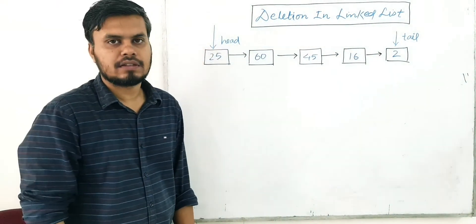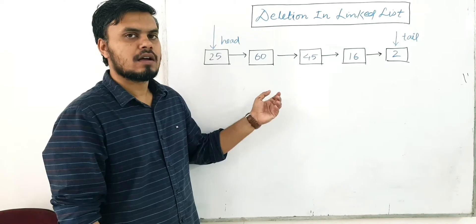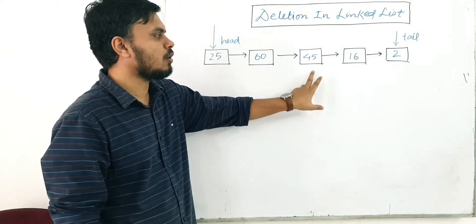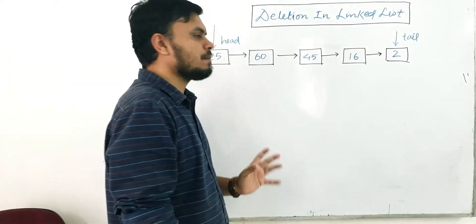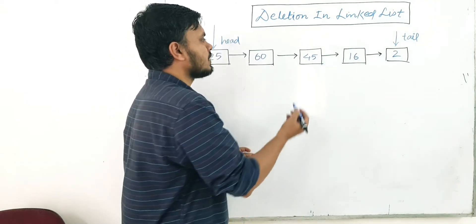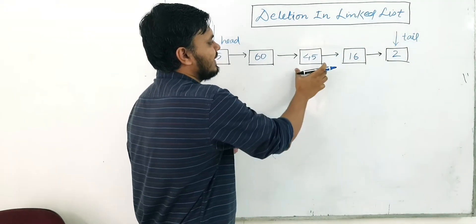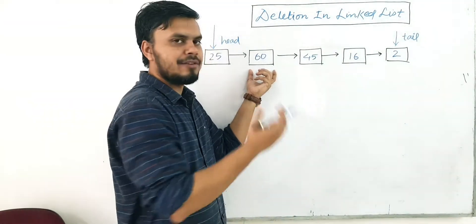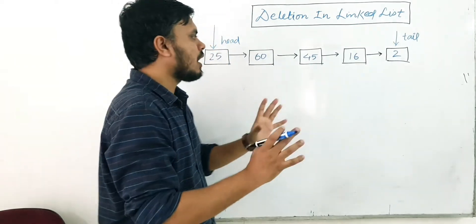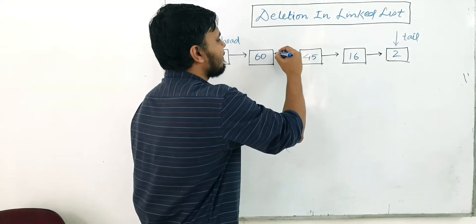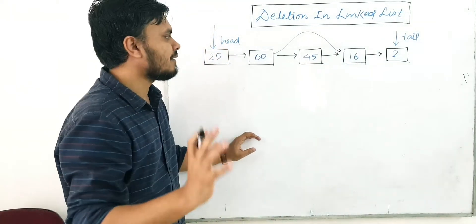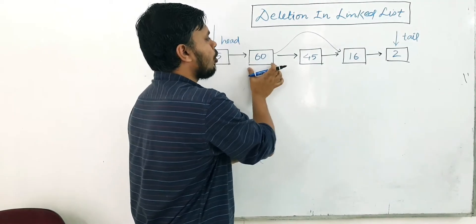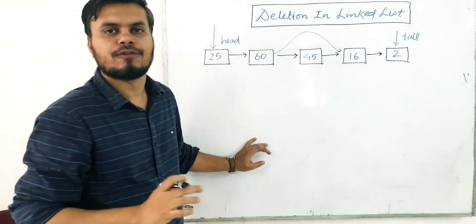Next we'll learn how to delete an item from the linked list by the given value. Let's say we want to delete this 45 node. The fundamental idea is very simple — we have to remove this item from the list. Right now this item is connected to two nodes, the previous one and the next one. We have to bypass this connection and create a new one, so that the previous node points to the next node instead of 45.